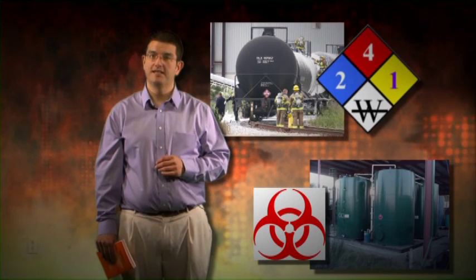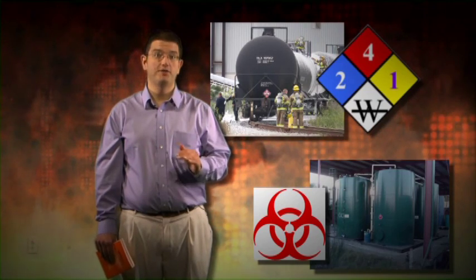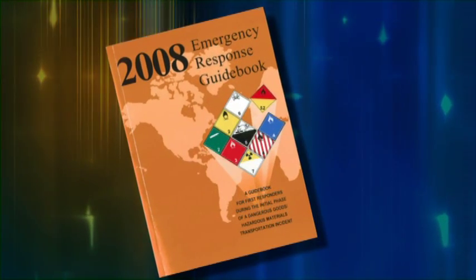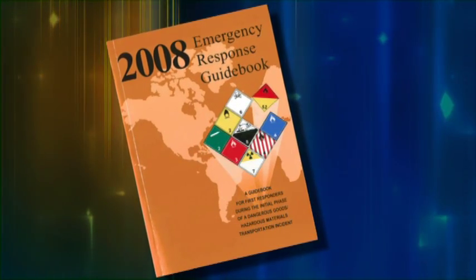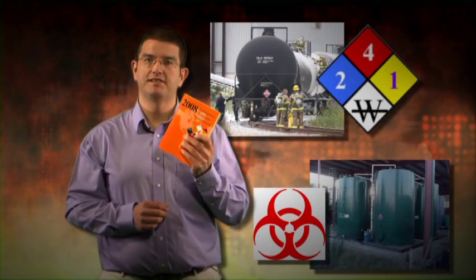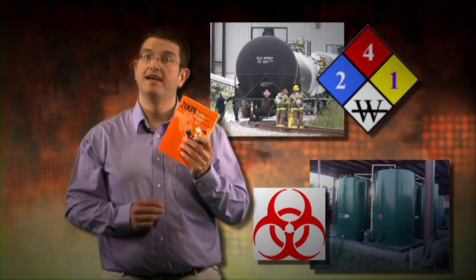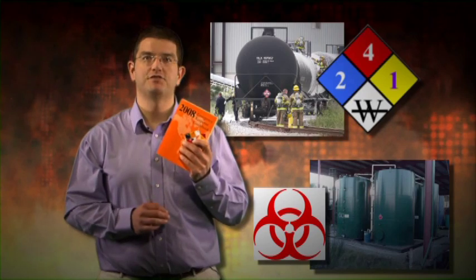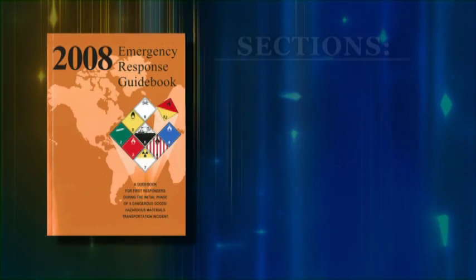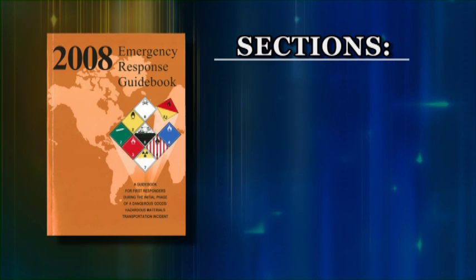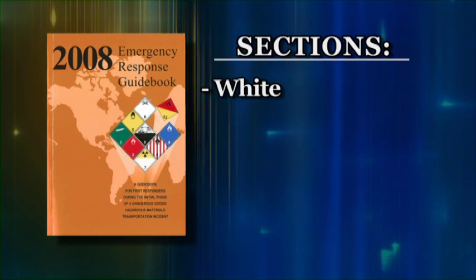How can you be sure you can identify all of the different containers you might come across, or recognize all the relevant labels? The DOT Department of Transportation guidebook is your source for all of that information. This guidebook should become your best friend. You must become familiar enough with it to quickly find the answers you need. The book is divided into five different sections and is color-coded so you can find the section you need quickly.